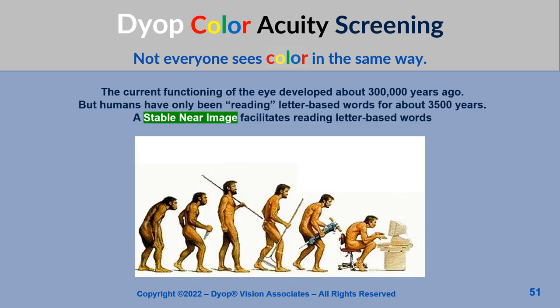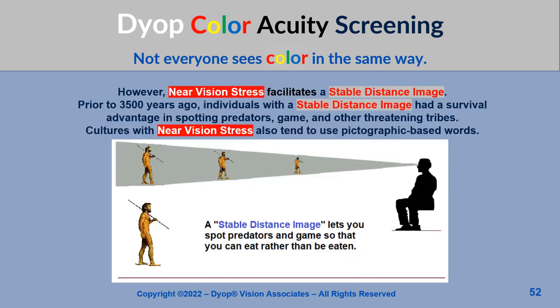The current functioning of the eye developed about 300,000 years ago, but humans have only been reading letter-based words for about 3,500 years. A stable near image facilitates reading letter-based words, while near vision stress facilitates a stable distance image. Prior to 3,500 years ago, individuals with a stable distance image had a survival advantage in spotting predators, game, and other threatening tribes. Cultures with near vision stress also tend to use pictographic words.